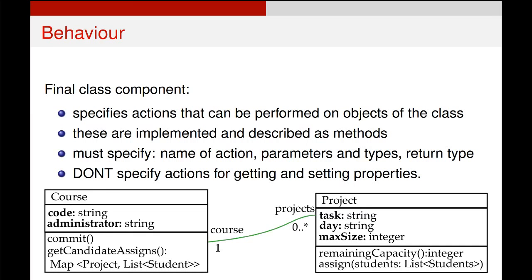This returns a map object that maps a project to a list of students. The multiplicity here is the same that we saw before.